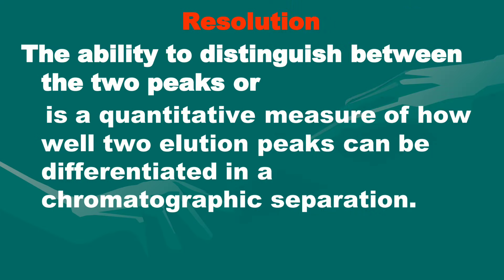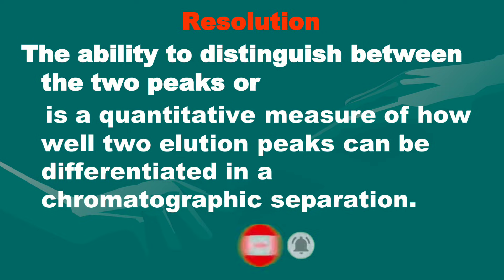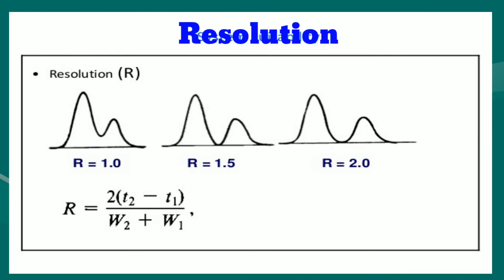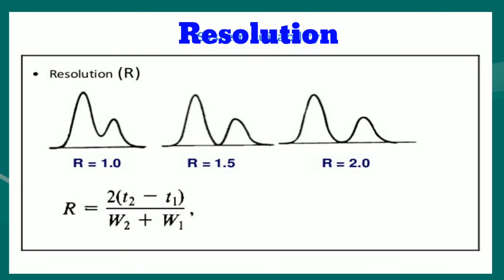Next is resolution. Resolution is the ability to distinguish between two peaks, or is the quantitative measure of how well two adjacent peaks can be differentiated in a chromatographic separation. In this figure, you can see the different values of resolution. According to the separation of peaks, the resolution value becomes increased.